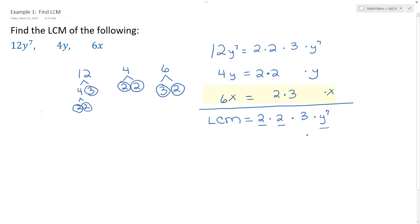And then for 6x, it says that we need a 2, a 3, and an x. Now, we are missing the x piece, so we need to multiply that piece in. And then we have all of the factors for each of the numbers and expressions that were listed there.